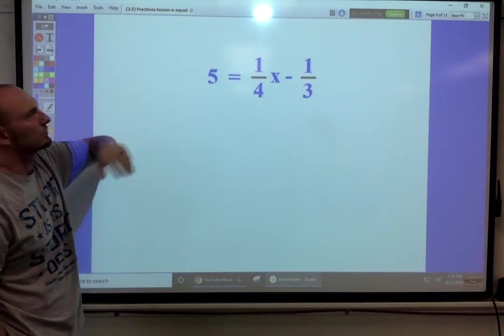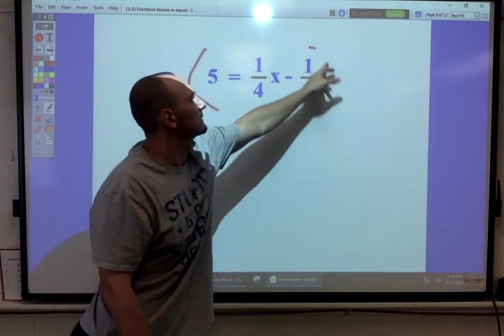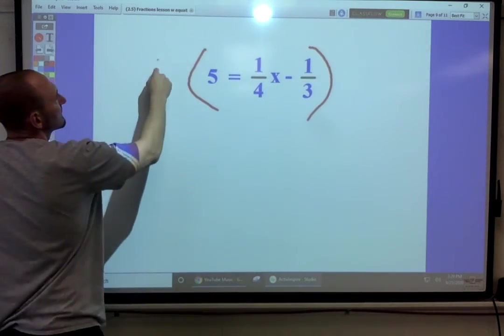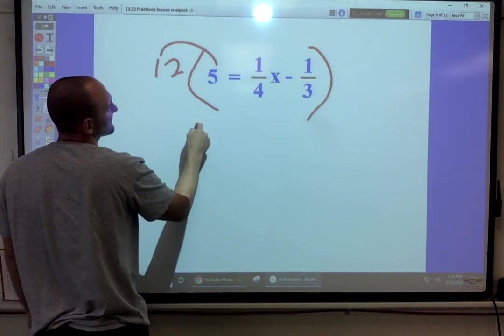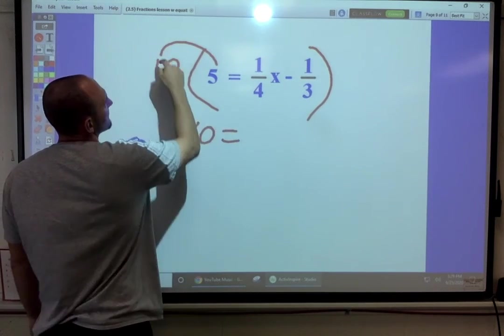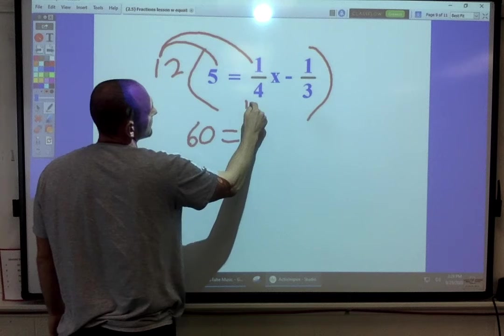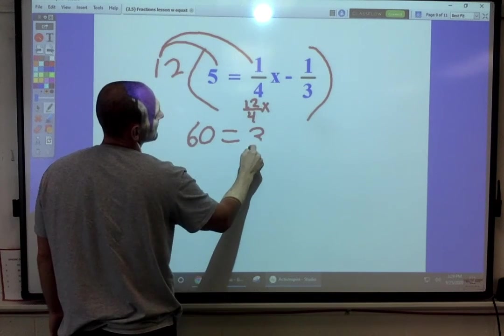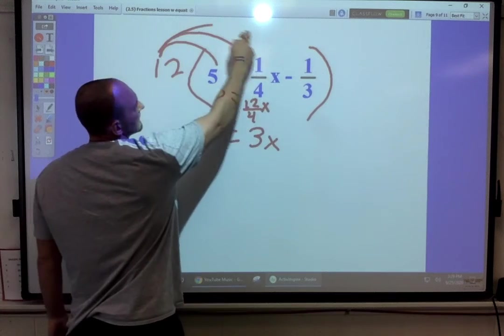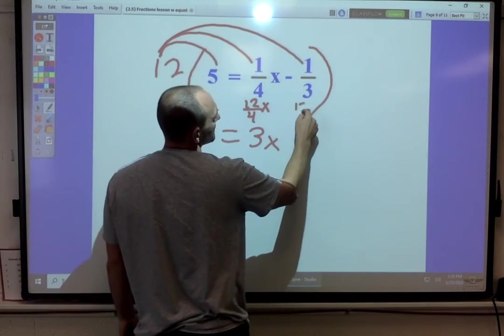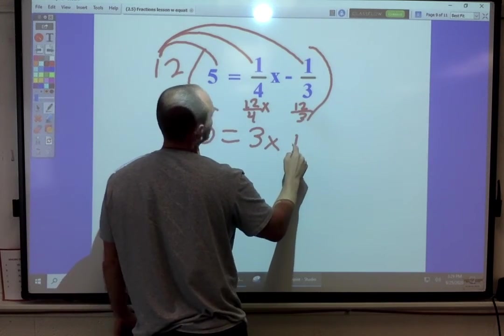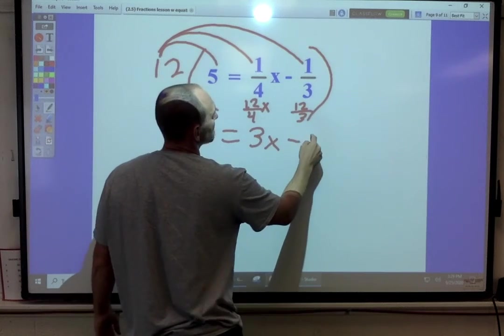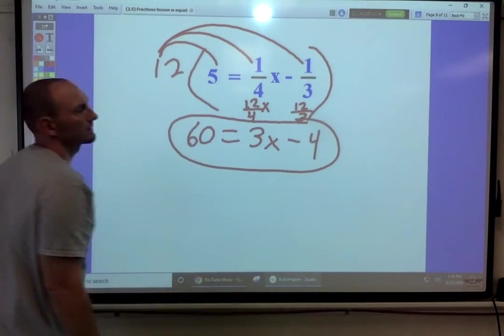Here, the common denominator is 12. If you're working ahead of me. 12 times 5 is 60. 12 times 1 is 12 over 4, which is really 3x. 12 times 1 is 12 over 3, which is actually minus 4. Now you're ready to solve it.